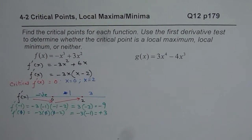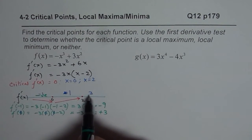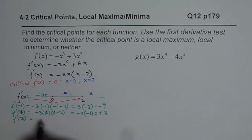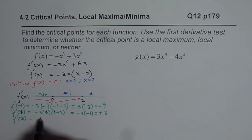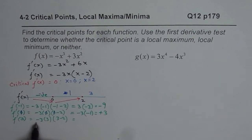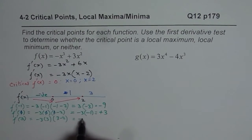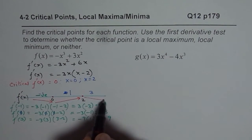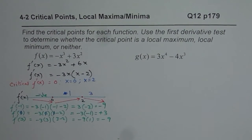Now let us take the test point as 3 for the interval beyond 2. The derivative at 3 is minus 3 times 3 times (3 minus 2), which is minus 9 times 1, equal to negative 9. Negative means the rate of change is decreasing, so the function is decreasing in this interval.